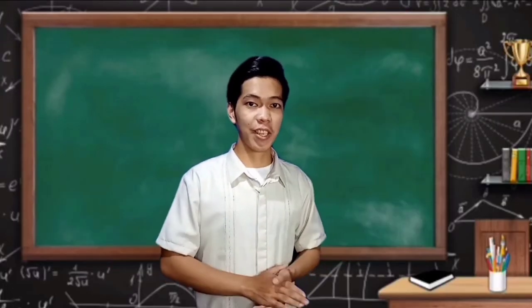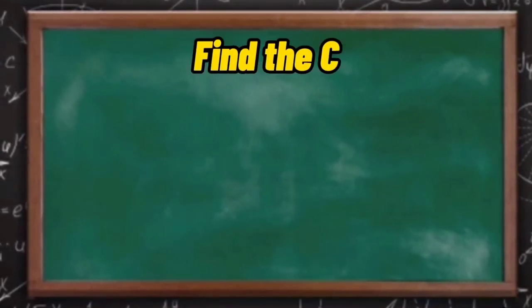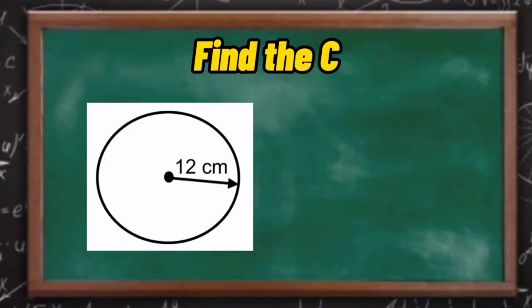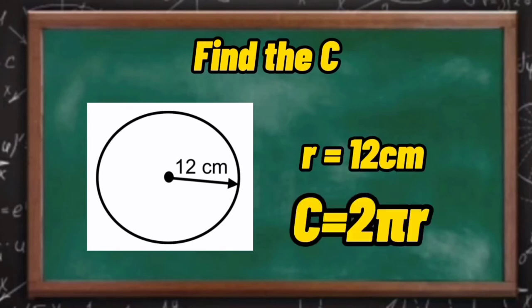So, here is the other example. Find the circumference of this circle with a radius of 12 cm using this formula. In this example, the radius is now given, which is 12 cm.